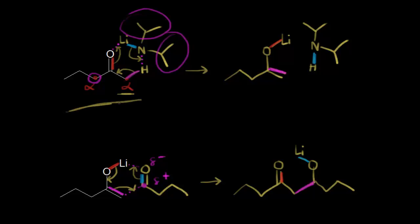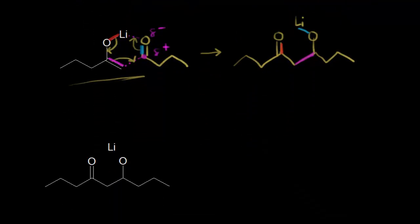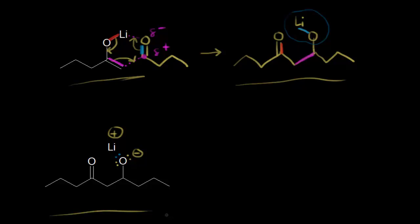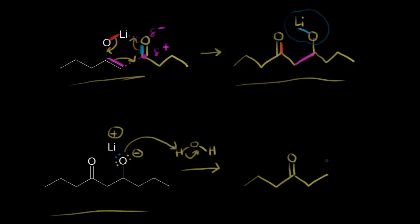Two cyclic mechanisms form the carbon-carbon bond: first deprotonation to give the lithium enolate, then addition of the aldehyde gives the lithium alkoxide. In the workup, the lithium alkoxide — represented with the oxygen bearing a negative charge and lithium as a cation — is protonated by water. Taking a proton from water protonates the alkoxide anion to give our aldol product.